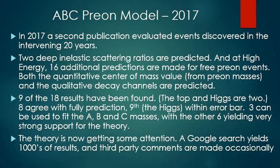In 2017, a second publication evaluated events discovered in the intervening 20 years for the ABC prion model. The ABC prion model predicts two deep inelastic scattering ratios, and at high energy, 16 additional predictions are made for free prion events. Both the quantitative center of mass value and the qualitative decay channels are predicted for those 16 predictions. Nine of the 18 results have been found, with the top and the Higgs being two of them. Eight of the nine agree fully with the qualitative and quantitative predictions, while the ninth is within the experimental error bar. The ABC prion model is now getting some attention — a Google search yields thousands of results, and third-party comments are being made on occasion.